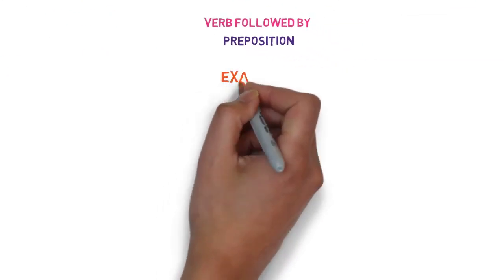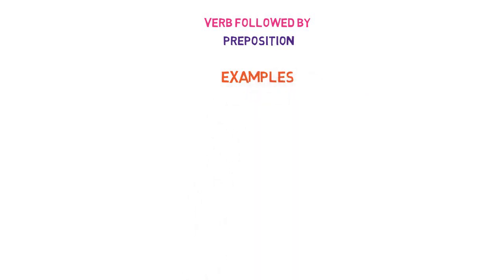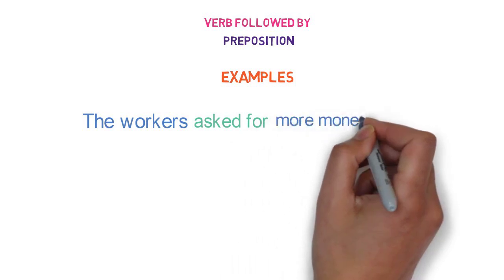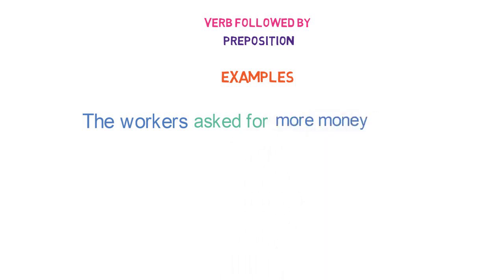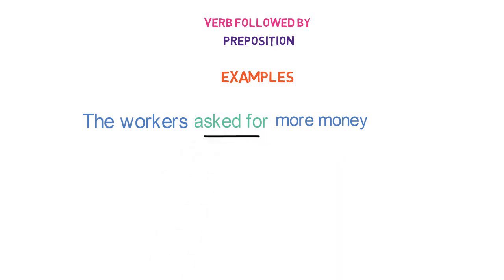Let's see examples of verbs followed by preposition. 'The workers asked for more money.' Here, 'asked' is the verb and 'for' is the preposition. The whole group of words 'asked for' is a phrasal verb containing a preposition.